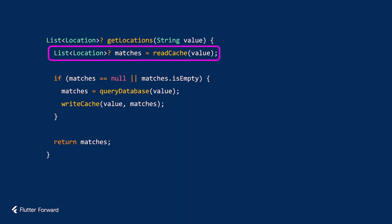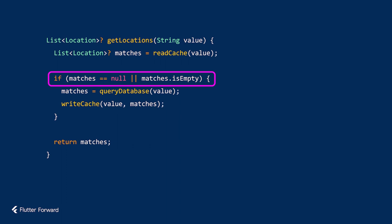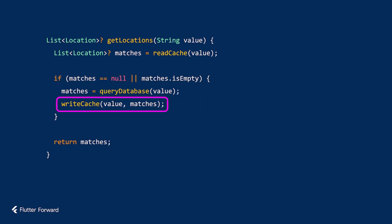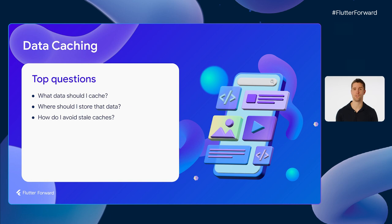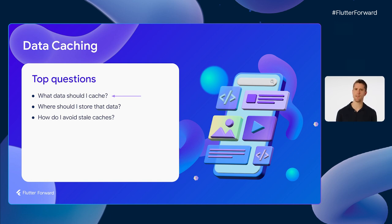Its first step is to see if the cache contains city names that match whatever they've typed. Then, if the cache didn't contain any matches, it queries my actual database, which will return any city names that match what the user typed. It then writes any matching city names back to the cache associated with that partial city name — this is what makes future autocomplete requests even faster. And lastly, it returns the matching city names. There are three important questions to answer: what data should you cache, where should you store that data, and how do you avoid stale caches?